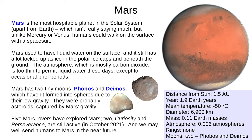Mars is the most hospitable planet in the solar system, apart from Earth — you could survive on the surface with a space suit. Mars used to have liquid water on its surface; most of this is now locked up as ice in the polar ice caps and underground. The atmosphere, which is mostly carbon dioxide, is too thin to permit liquid water these days, except possibly for occasional brief periods at very low altitudes. Mars has two tiny moons, Phobos and Deimos — fear and panic — which were probably asteroids captured by Mars's gravity. Five robotic rovers have explored Mars, and two, Curiosity and Perseverance, are still going. We might well send humans to Mars in the next decade or so.